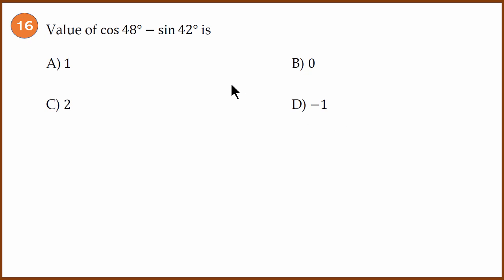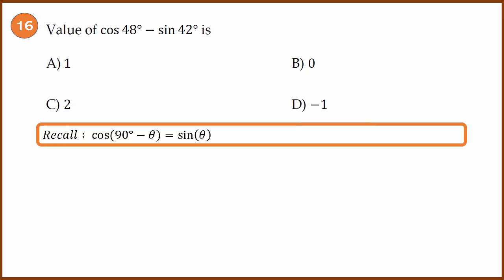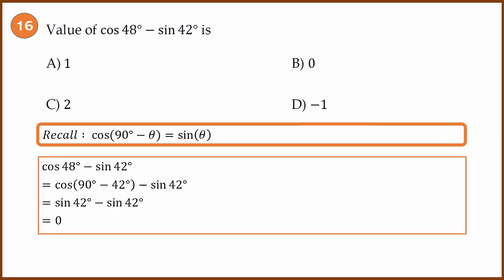Question 16: Complementary angle question. Value of cos 48° - sin 42°. We know that cos(90° - θ) = sin θ. Cos 48° - sin 42° can be written as cos(90° - 42°), because 42 + 48 is 90. Cos(90° - θ) is sin θ, so this equals sin 42°. Sin 42° - sin 42° is 0. Answer is B.